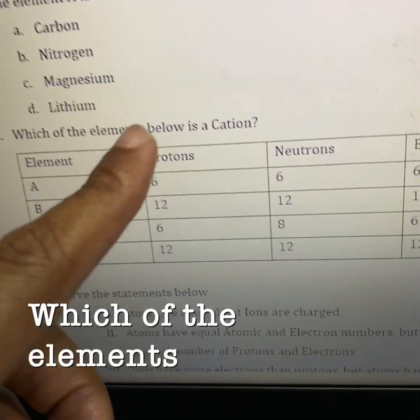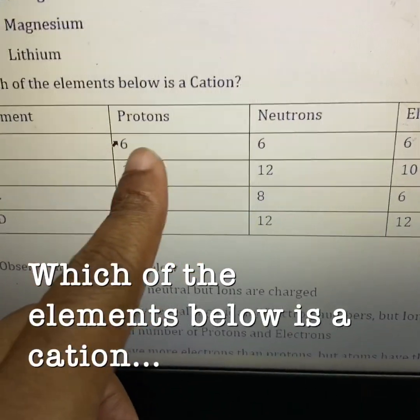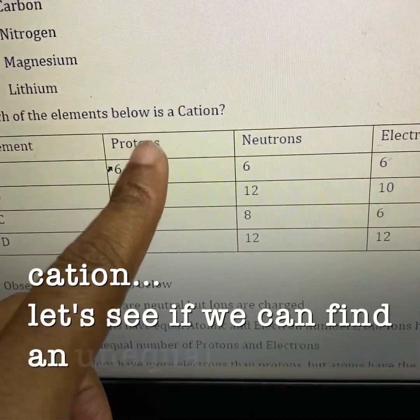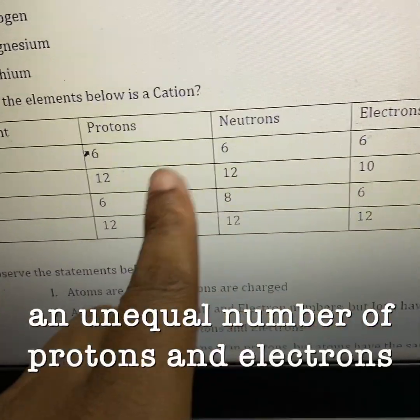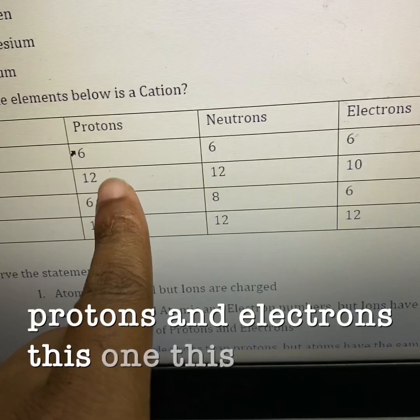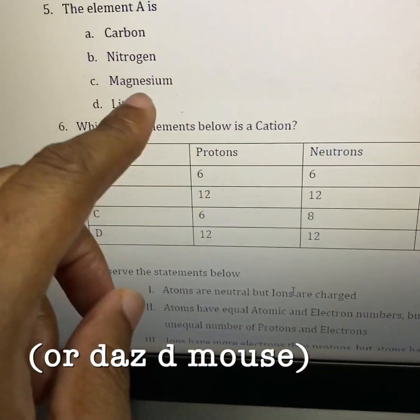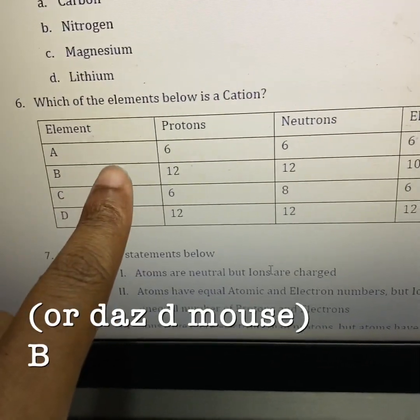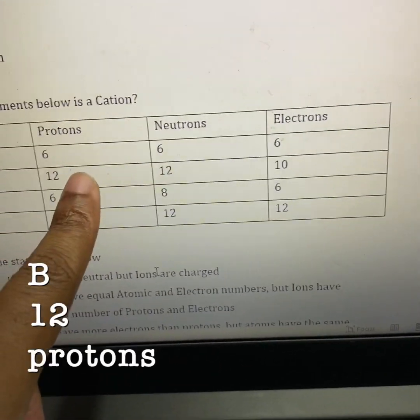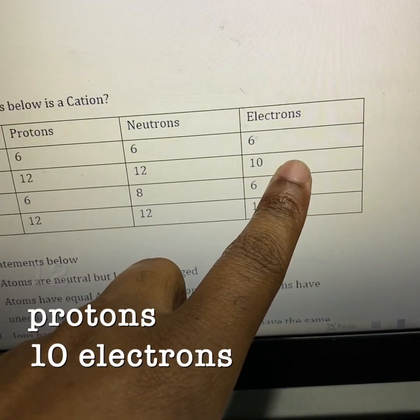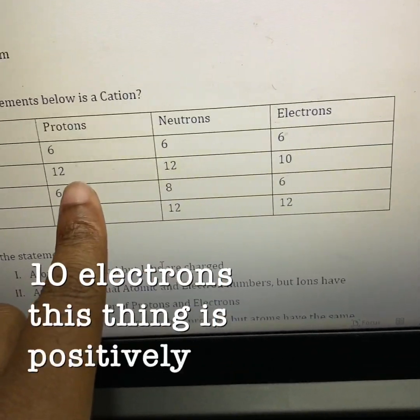Which of the elements below is a cation? Let's see if we can find an equal number of protons and electrons. This one. What's this? That's the mouse. B. 12 protons, 10 electrons. This thing is positively charged.